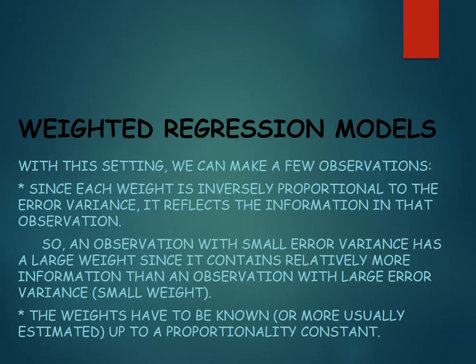With this setting, we can make a few observations. First, since each weight is inversely proportional to the error variance, it reflects the information in that observation. So an observation with small error variance has a large weight, since it contains relatively more information than an observation with large error variance.